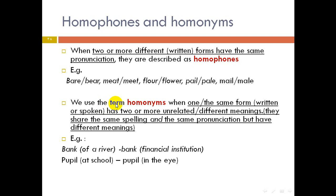Homonyms: when one and the same form — written or spoken — has two or more unrelated or different meanings, we use the term homonyms. They share the same spelling and pronunciation but have different meanings. For example: bank (of a river) / bank (financial institution); pupil (at school, a student) / pupil (of the eye).